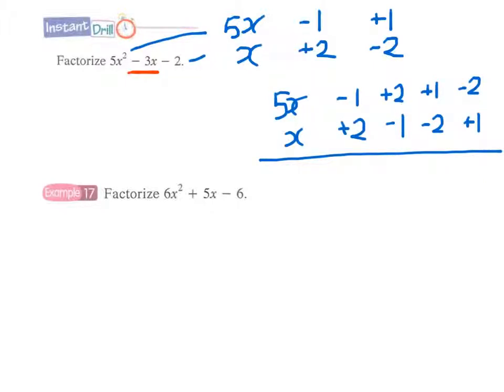And now we can do the cross multiplication mentally. For example, the first pair won't give the term of -3x as the middle term. The first pair does not work because obviously you have 5x times 2 giving 10x, that will be too large. And for the second pair...